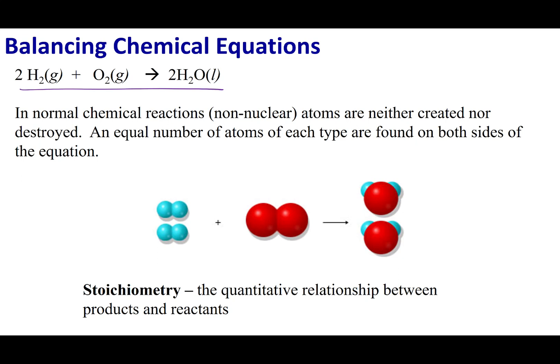Let's look at a balanced equation and break it apart. On the reactant side I have H₂ and O₂. H₂ is a molecule — two blue spheres, each a hydrogen atom, represent the H₂ molecule. The red spheres represent oxygen atoms, so two red spheres together represent the O₂ molecule. On the product side I have water, made out of two hydrogens (the blue spheres) and one oxygen (the red sphere) in the center.